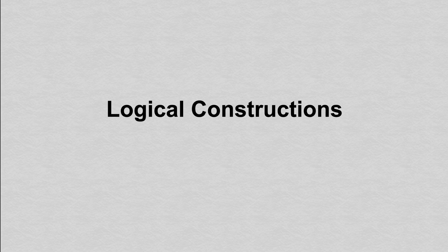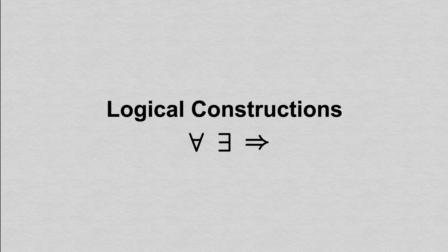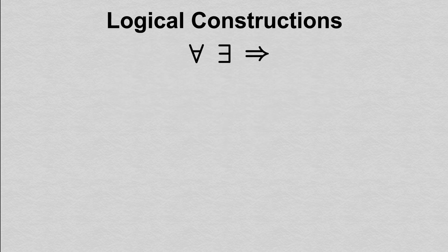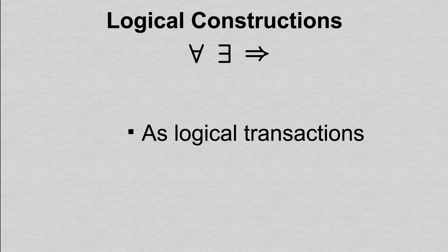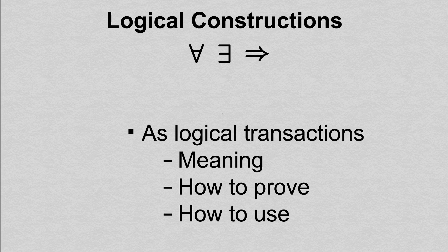All of abstract mathematics is built upon three logical constructions: for all, there exists, and implies. In this video, we'll learn to think of each one as a sort of logical transaction, discussing all three in terms of what they mean, how they're proven, and how we can use such a statement in our own proofs.